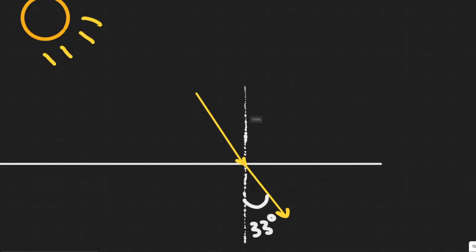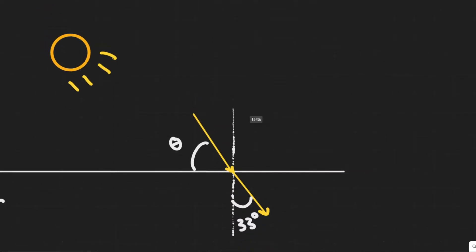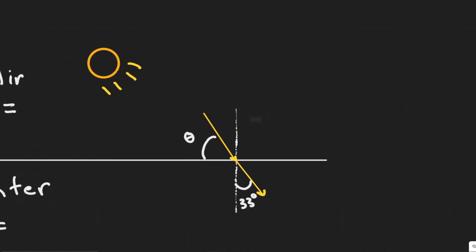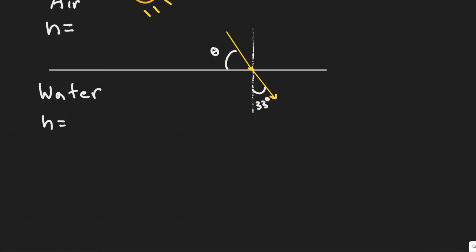So what we're trying to find is this angle theta right here — the sun is shooting this beam of light, and we want to find that angle theta. In order to do this, we're going to use Snell's Law.